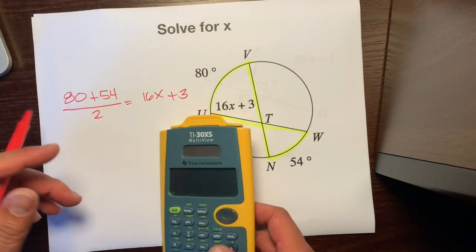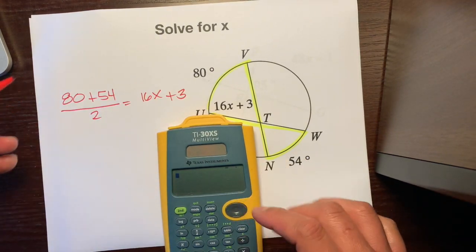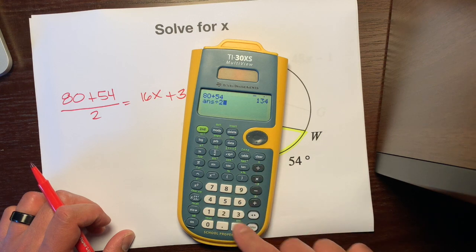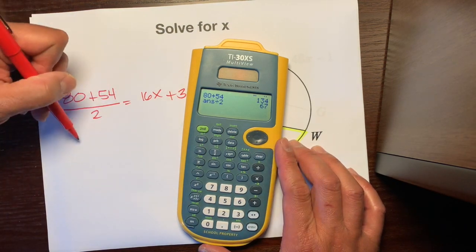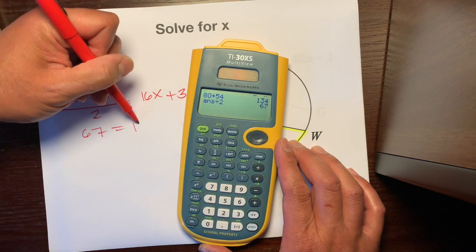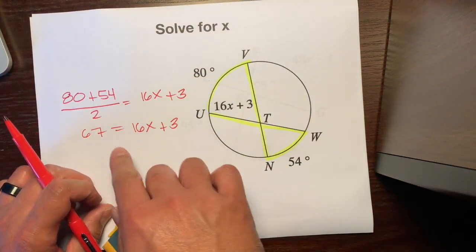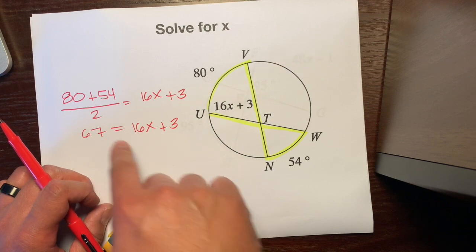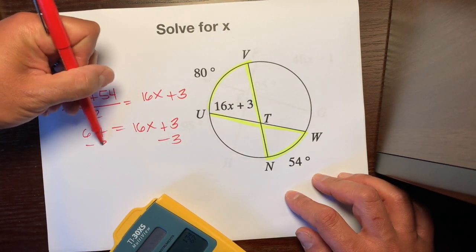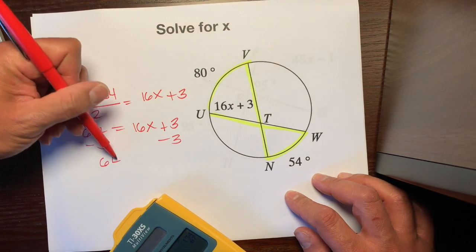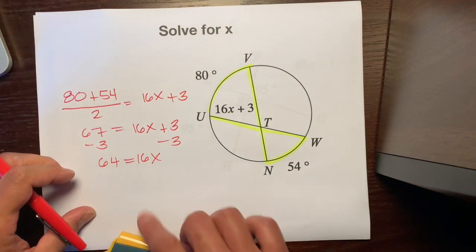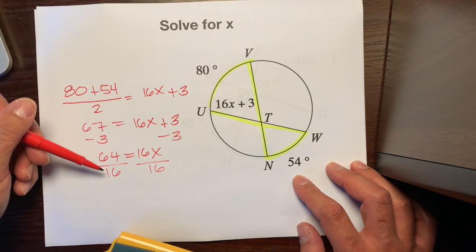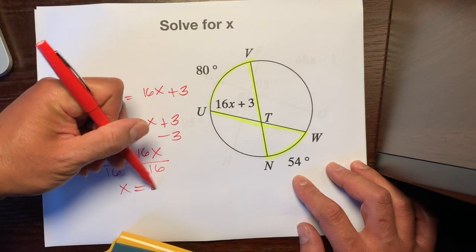Before cross-multiplying, let's add and divide first. 80 plus 54 divided by 2 equals 67. We set that equal to 16x plus 3. So this angle and its vertical angle are both 67 degrees. The question asks for X, so let's solve: subtract 3 from both sides — 67 minus 3 is 64 — equals 16x. Opposite of multiplication is division: 64 divided by 16 is 4. So X equals 4.